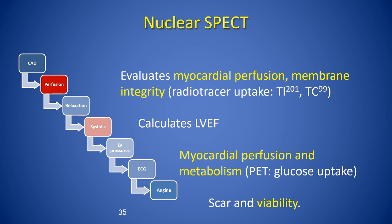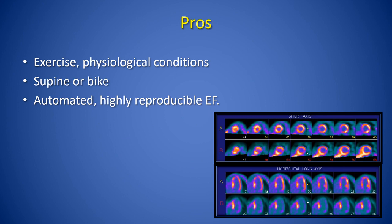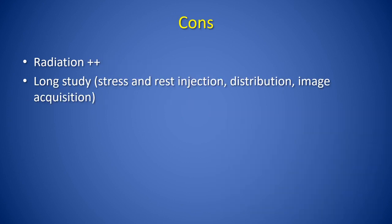Nuclear stress imaging doesn't directly look at the coronary arteries, but it does look at perfusion—evaluating perfusion and membrane integrity with radiotracer uptake. It can calculate ejection fraction, and myocardial perfusion and metabolism are possible with PET, including the use of glucose uptake. It is also useful for looking at scar and myocardial viability. The advantages of nuclear stress imaging include the ability to determine exercise physiology with bicycle or treadmill exercise and that it is very automated, providing a highly reproducible ejection fraction. Disadvantages include the use of radiation, studies can be long due to rest and stress injections, patients' inability to lie still, irregular rhythms affecting gating, and attenuation artifacts that can lower specificity.